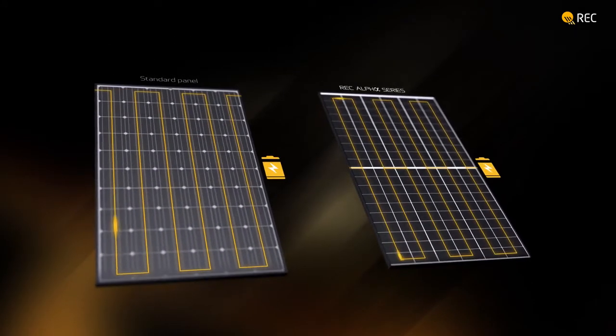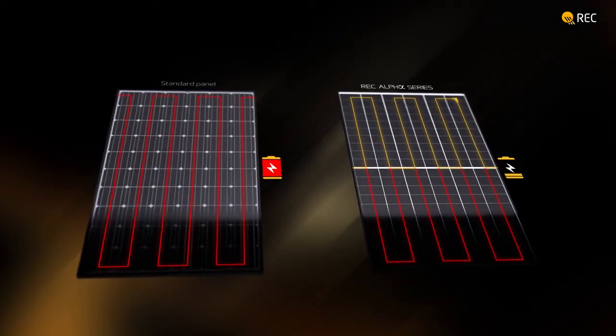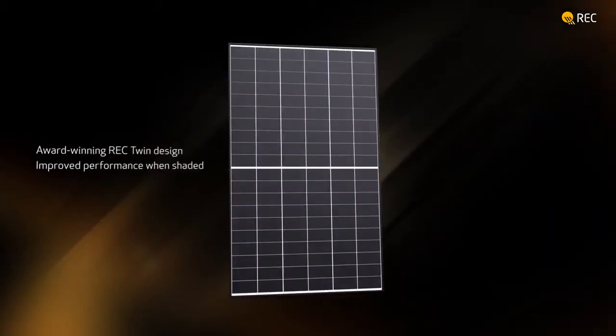Furthermore, if shade falls on a REC Alpha panel, one half continues generating electricity even when the other half is shaded, for a higher energy yield.